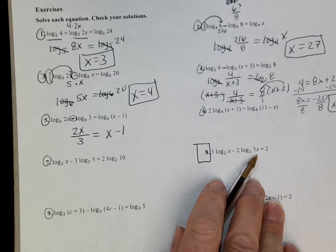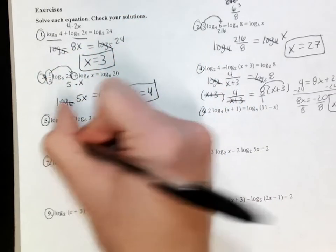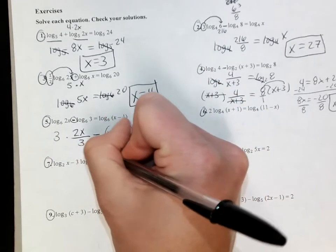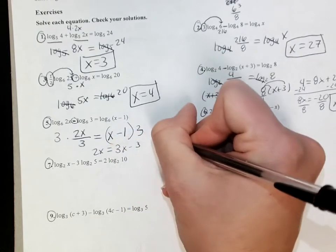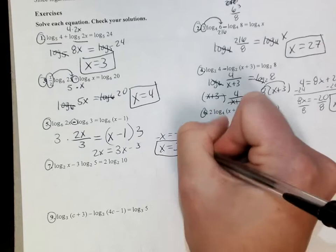You just have to be sure you're paying attention. Because you cannot do that there. When I get ready to solve this, I'm going to multiply by 3. 2x equals 3x - 3. That gives me negative x equals negative 3 or x equals 3.